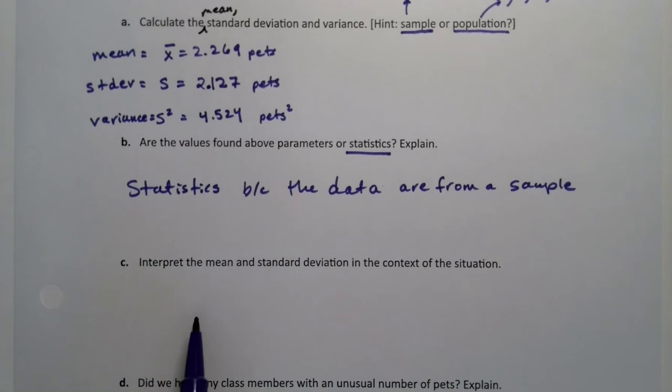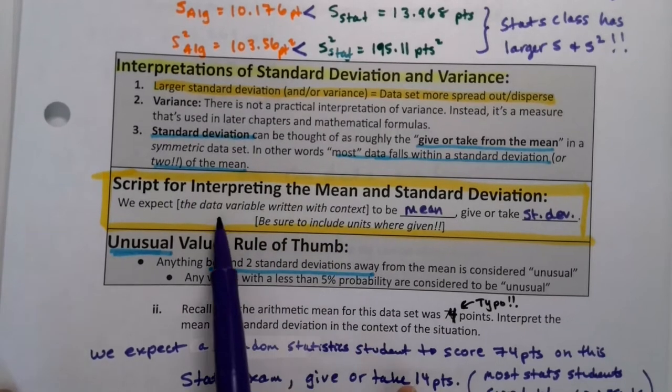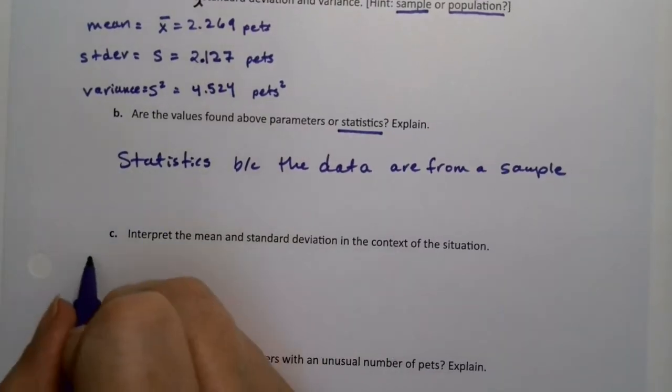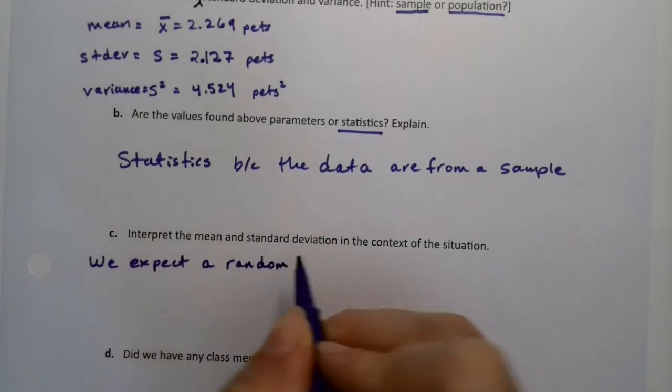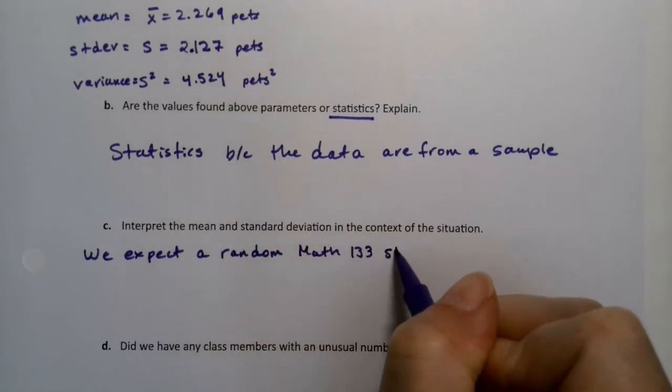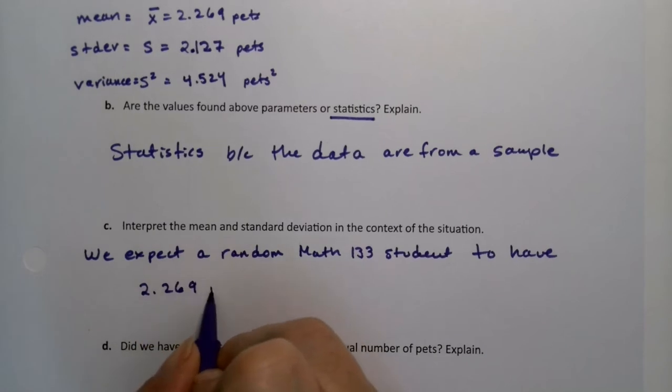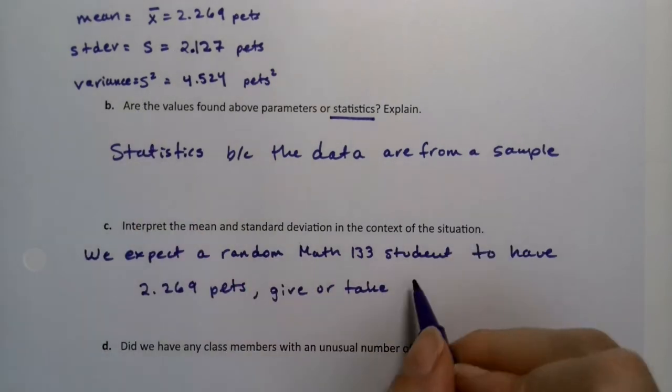The reason I wanted us to find the mean is because I want us to be able to do this interpretation piece, which we have a script for. We expect the data variable written in context to be whatever the mean is, give or take the standard deviation. So we expect a random Math 133 student to have 2.269 pets, give or take 2.127 pets.